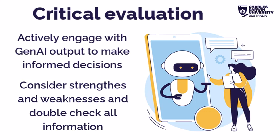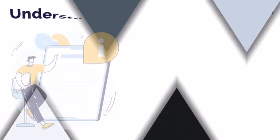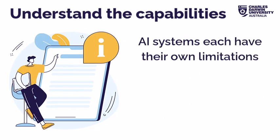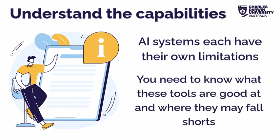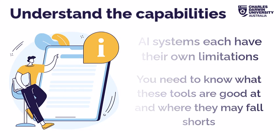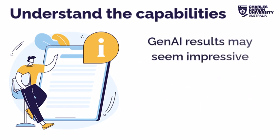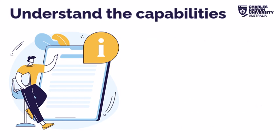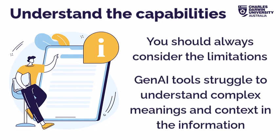So how do you critically evaluate Gen AI content? First, we need to understand the tool's capabilities. AI systems like Gen AI each have their own limitations that we should be aware of. It's important to know what these tools are good at and where they may fall short, so we can properly assess the output they produce. Even though the results generated by Gen AI might seem impressive, it's crucial to remember that these tools don't actually understand or reason like humans do. They work by analysing patterns and making educated guesses based on the input prompt and their training data.